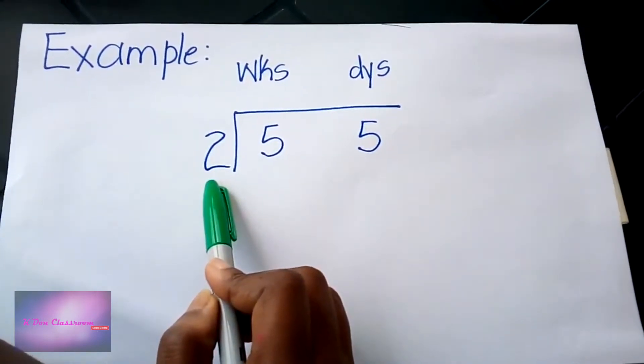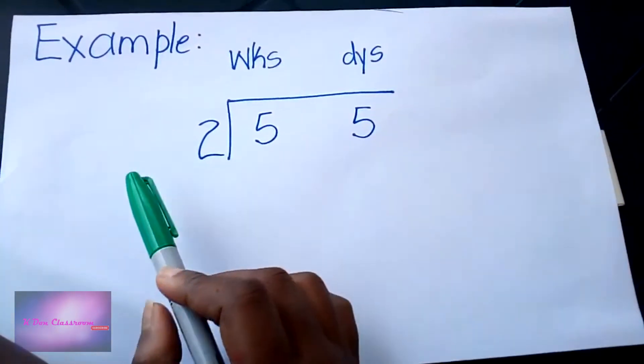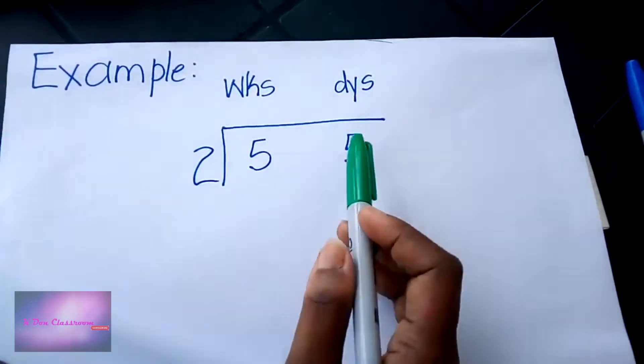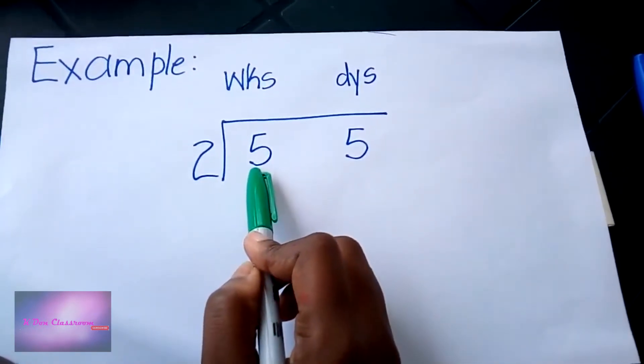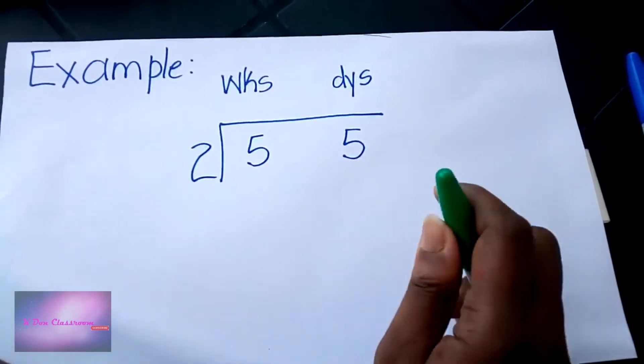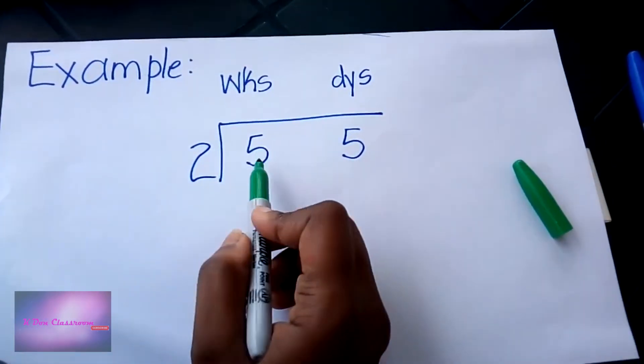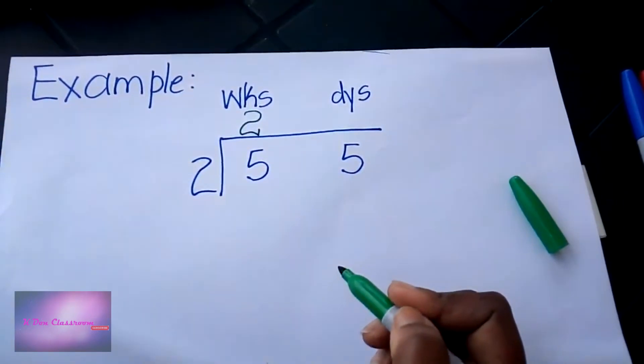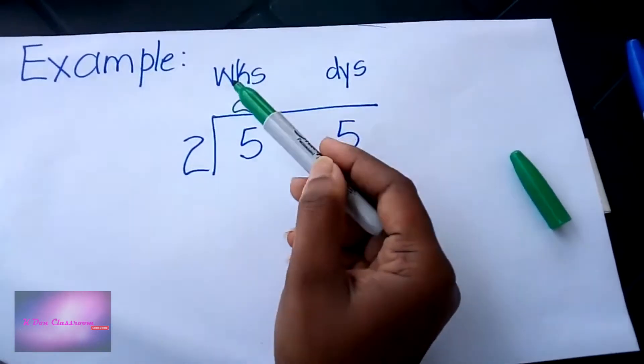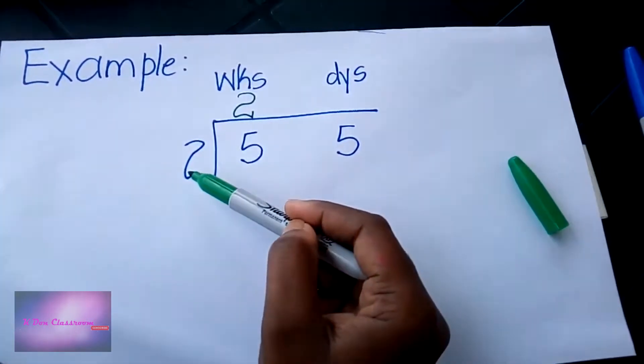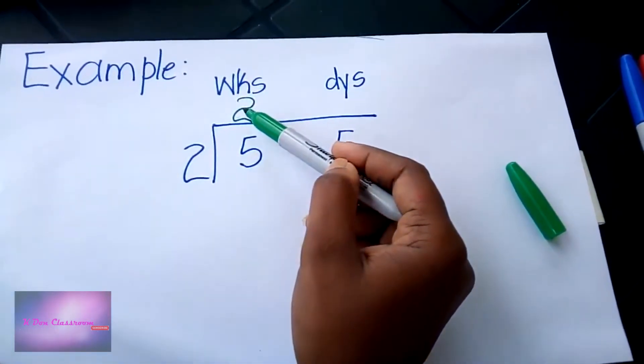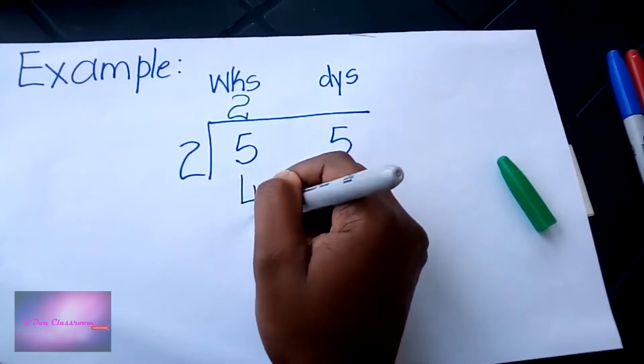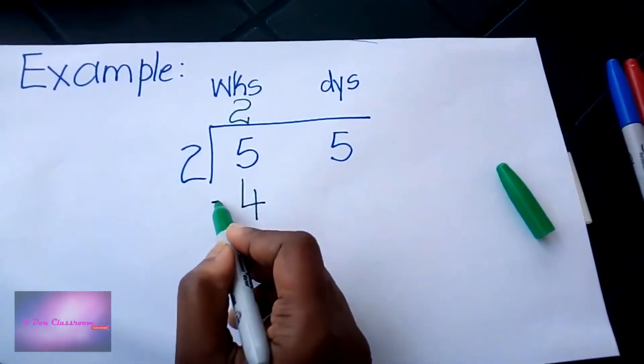We are going to proceed as if we were doing a regular division. We are going to see how many times can two go into five. Two can go into five two times, so we're going to put two at the top. We will multiply by our divisor. Two multiplied by two will give us four, so I will write four below my five, and then I will subtract.